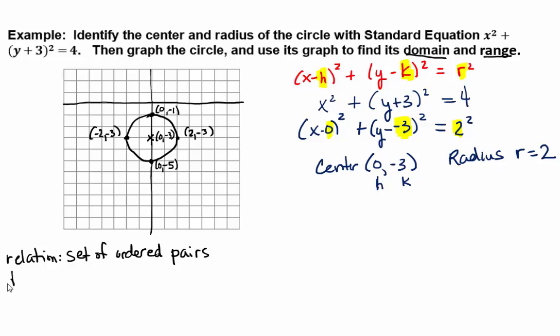We can't list them all out because there's an infinite number of them. And in a relation, what does domain refer to? The x values. That's right. The first coordinate of each ordered pair.